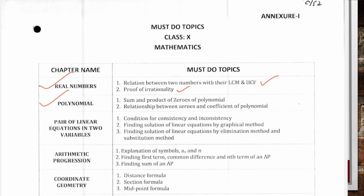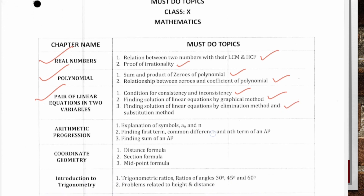From Chapter 2 Polynomials, two topics: sum and product of zeros of polynomial, and relationship between zeros and coefficient of polynomial. From Chapter 3 Pair of Linear Equations in Two Variables, three must topics: first, condition for consistency and inconsistency; second, finding solution of linear equations by graphical method; third, finding solution by elimination and substitution method.